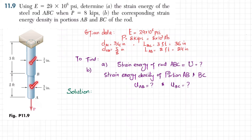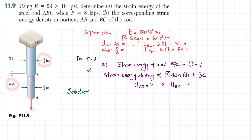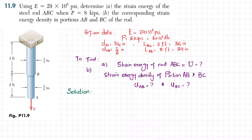You can see rod AB and rod BC, acted upon by load P. The length of BC is 3 feet while AB is 2 feet. The diameter of BC is 3/4 inch and the diameter of AB is 5/8 inch. Writing the given data: E for steel is 29 into 10 to the power 6 psi, load P is 8 kips. Length of BC is 3 feet, which is 36 inches, and length of AB is 2 feet, which is 24 inches.